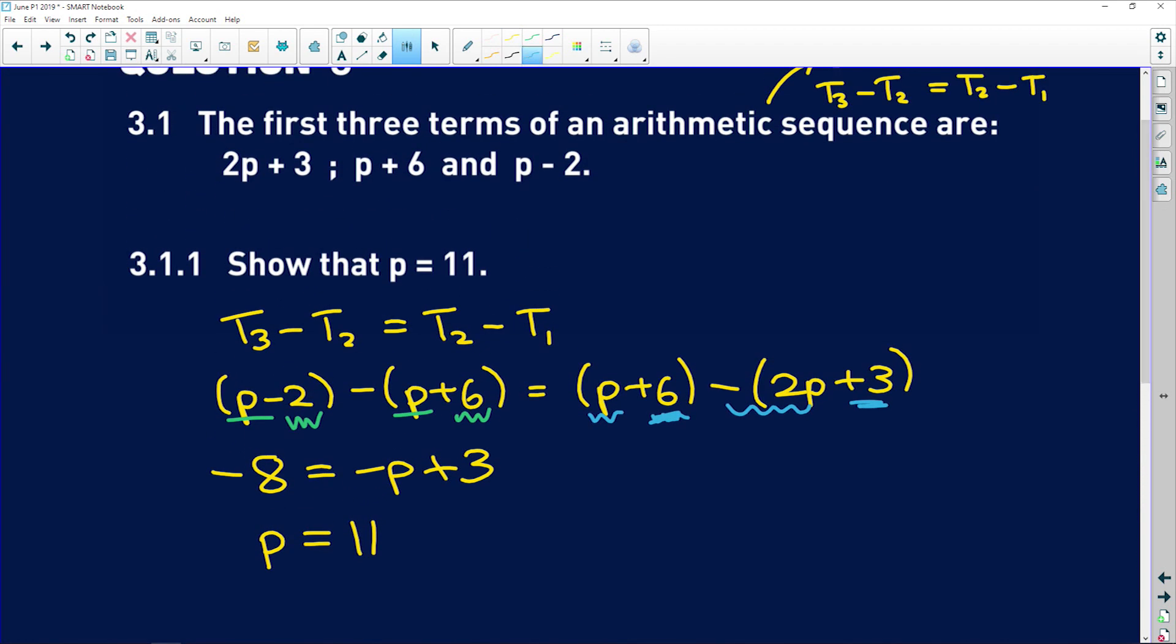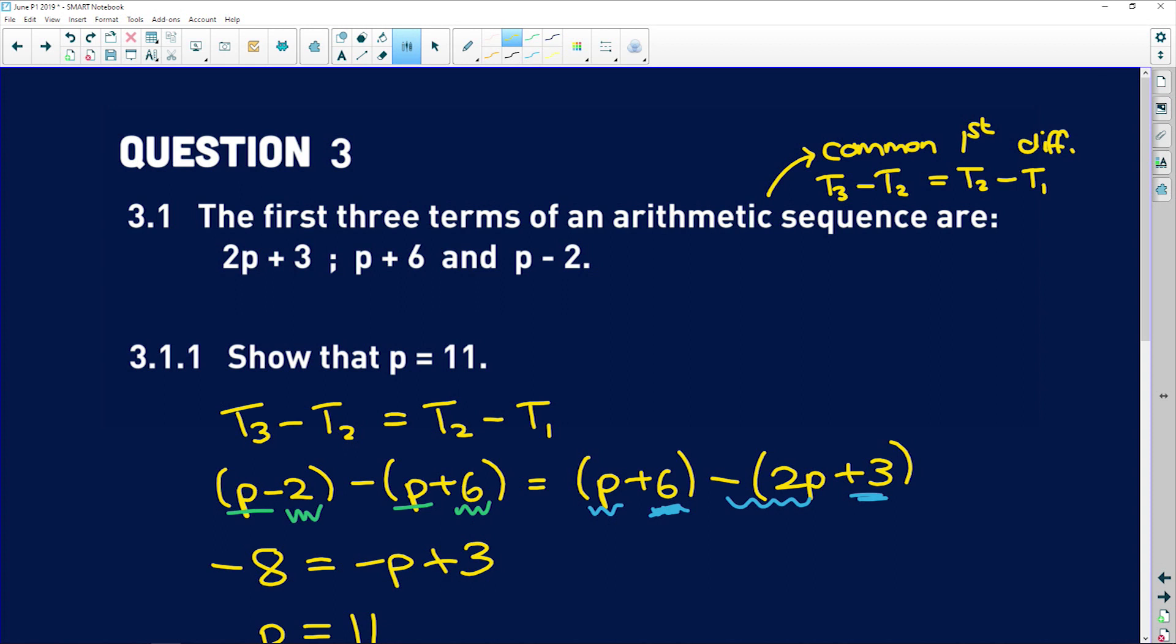So first we need to go and substitute p equals 11 into our series. Term 1 is 2p plus 3, so 2 times 11 is 22 plus 3 is 25. Term 2 is 11 plus 6, which is 17, and term 3 is 11 minus 2, which is 9.